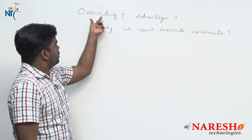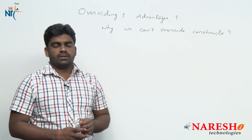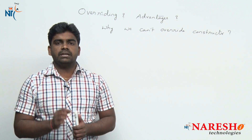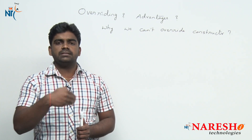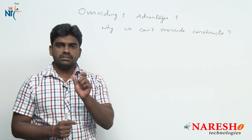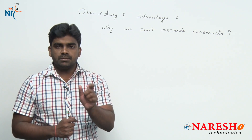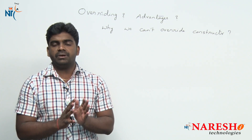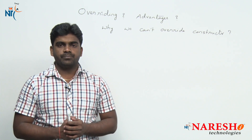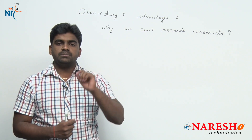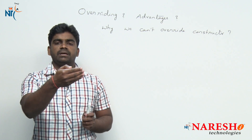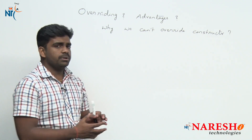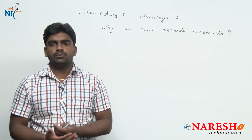Here, first of all, what is overriding — a simple definition. Overriding means defining a method inside the child class with the same name and same signature of its parent class method. Inside the parent class, already one method is there with the same name and same signature. We are defining the method inside the child class. Let's look at an example for more clarity.